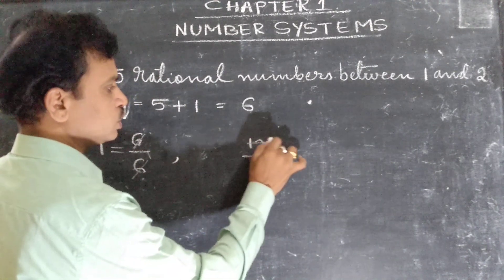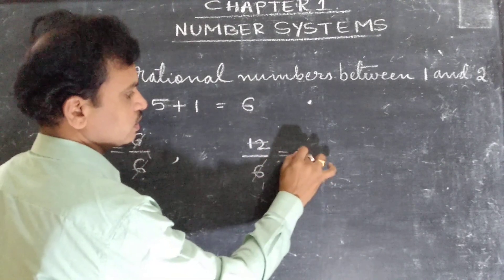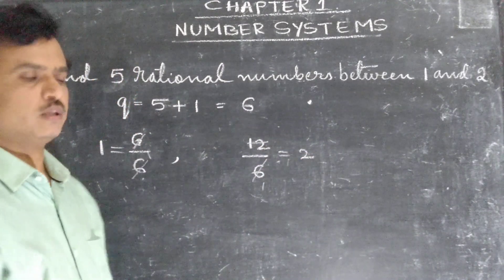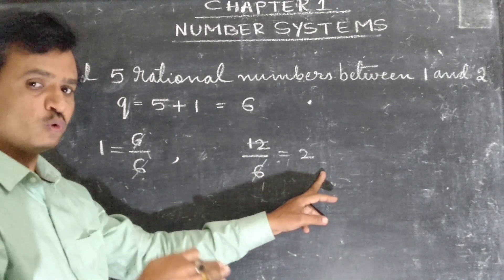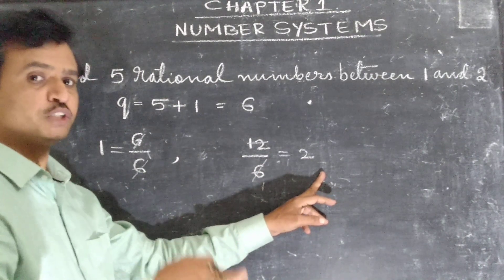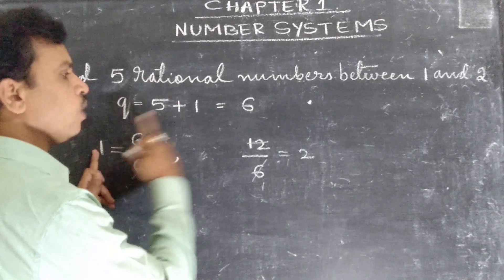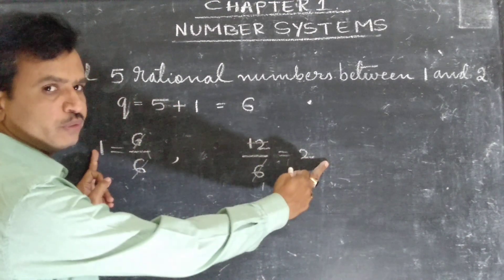6 ones are 6, 6 twos are 12. That means we got 1 and 2. Now what should we do? We should find the rational numbers in between 1 and 2.